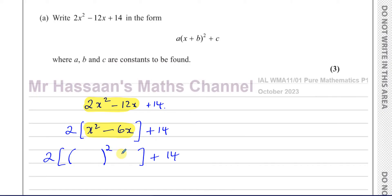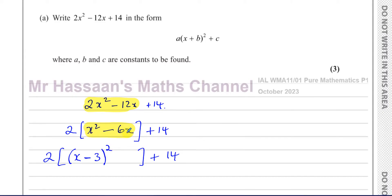You write the bracket squared. Inside the bracket you write the square root of x, then the minus sign because there's a minus here — if there's a plus you write plus. Then you take the coefficient of x and divide it by 2: 6 divided by 2 is 3, so that becomes minus 3. Now we make sure that when we expand this we get whatever's inside the bracket — expanding gives x² minus 6x plus 9.